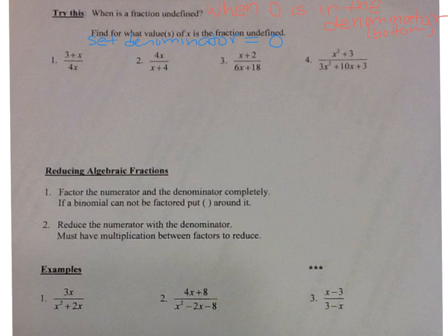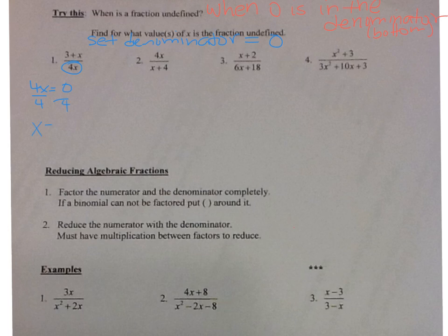Let's take a look at number one. It does not matter what's in the numerator — it's what's in the denominator. I want to know for what value of x could I plug in to make 4x equal to zero. 4 times what number is equal to zero? That's zero, so x is equal to zero. If you're not sure, take the denominator, set it equal to zero, divide both sides by 4 — zero divided by 4 is zero. So the fraction is undefined when x is equal to zero.